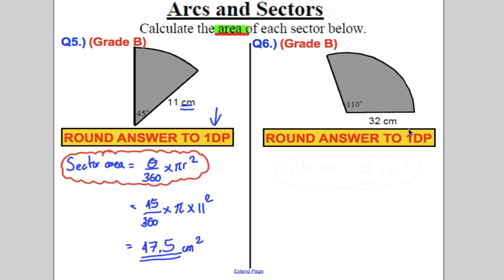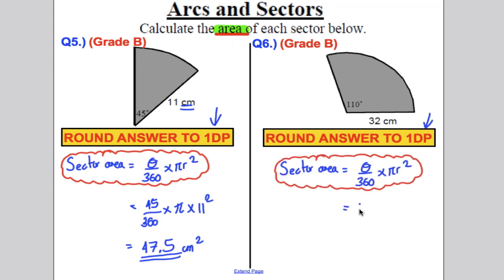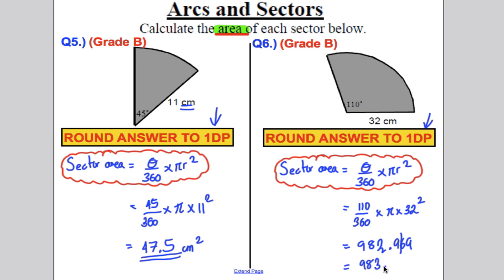Next, we're asked to round to 1 decimal place again. Applying the formula: area = (110/360) × π × 32². Typing that into the calculator gives 982.969. Rounding to one decimal place — because the next digit is 6, we round up — giving 983.0 centimetres squared. Underline your work.